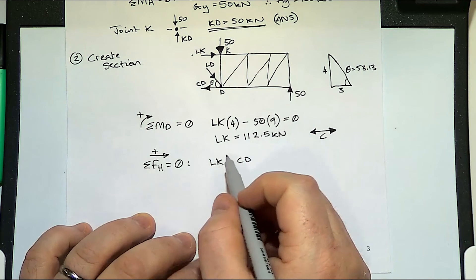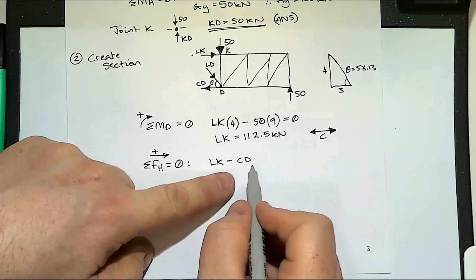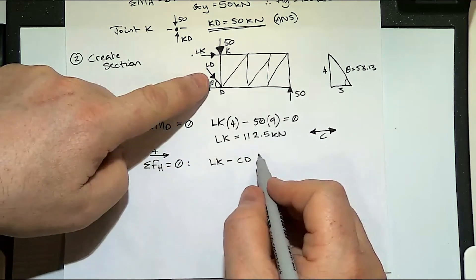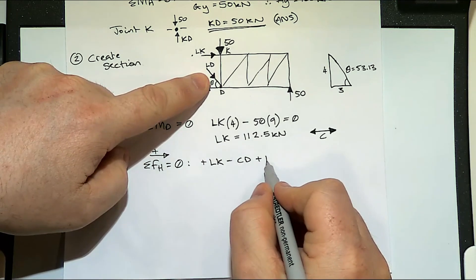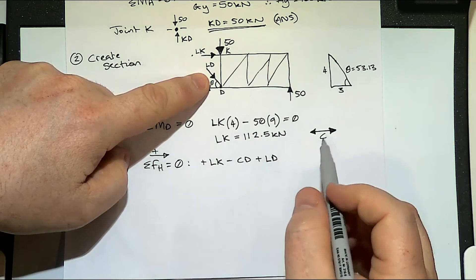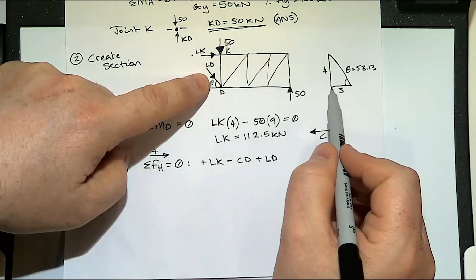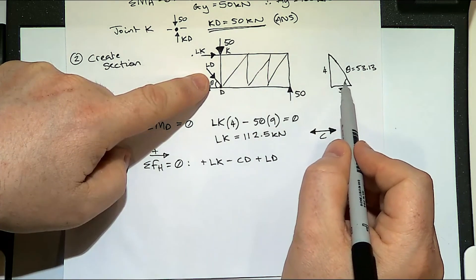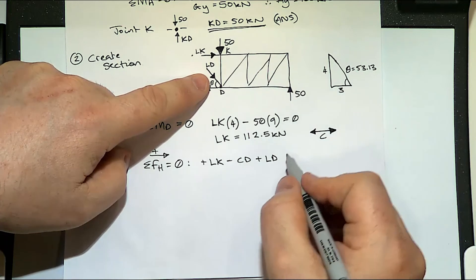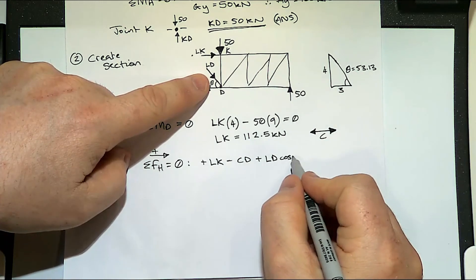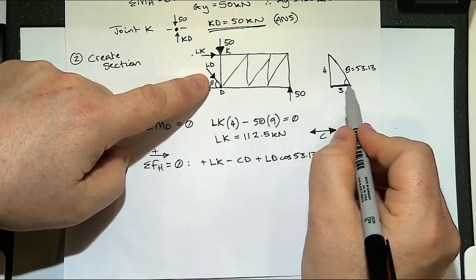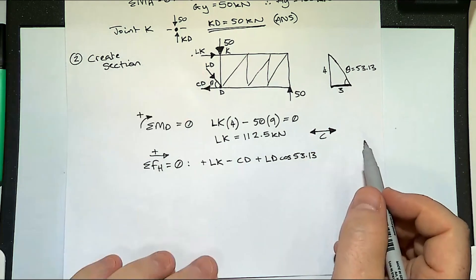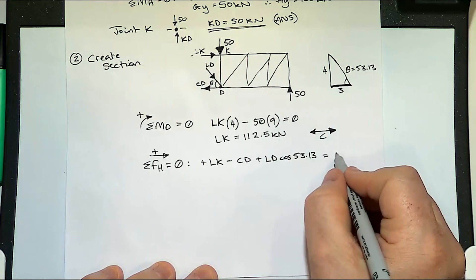So we've got LK, CD going the other way and then LD is going to the right also so it's plus LD and how much of that LD is acting horizontally so that's the cosine 53.13. All of that equals zero.